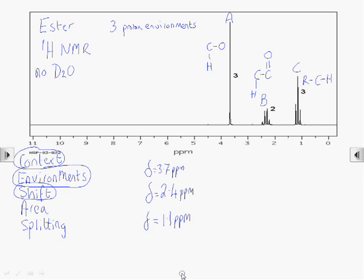Next we need to use the area information. This is the area under each peak, and it tells us how many protons are in that environment. So there are three identical hydrogens in environment A. That makes A a CH3 group next to an oxygen.